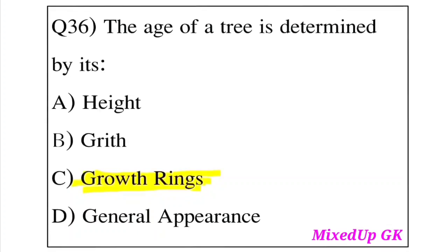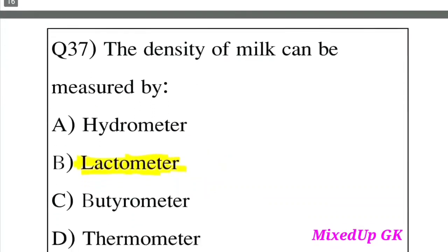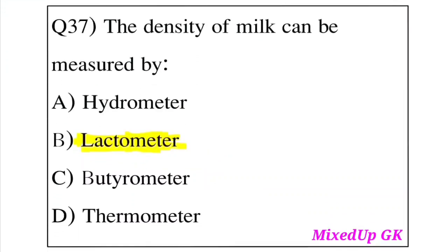Question 36: The age of a tree is determined by which of the following? Option A: Height. Option B: Girth. Option C: Growth rings. Option D: General appearance. The answer is Option C, Growth rings. Question 37: The density of milk can be measured by which instrument? Option A: Hydrometer. Option B: Lactometer. Option C: Barometer. Option D: Thermometer. The answer is Option B, Lactometer.